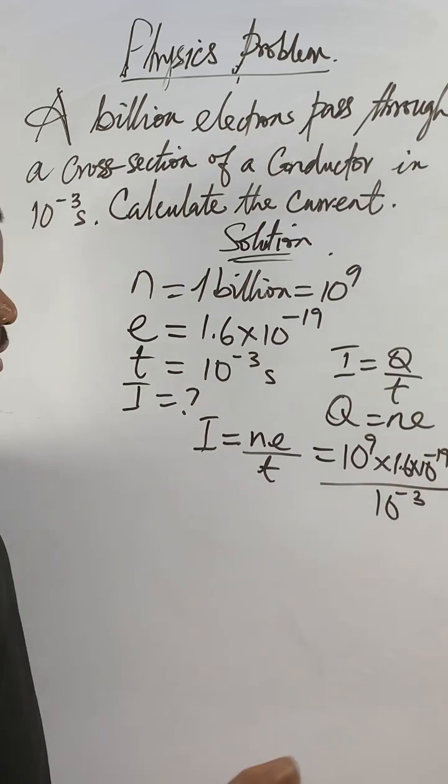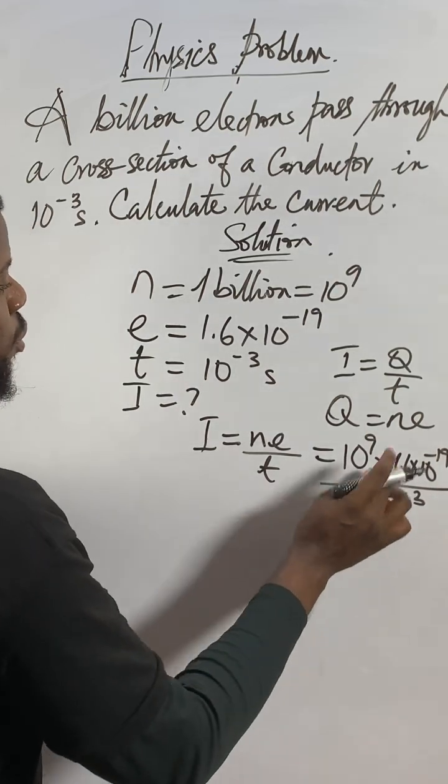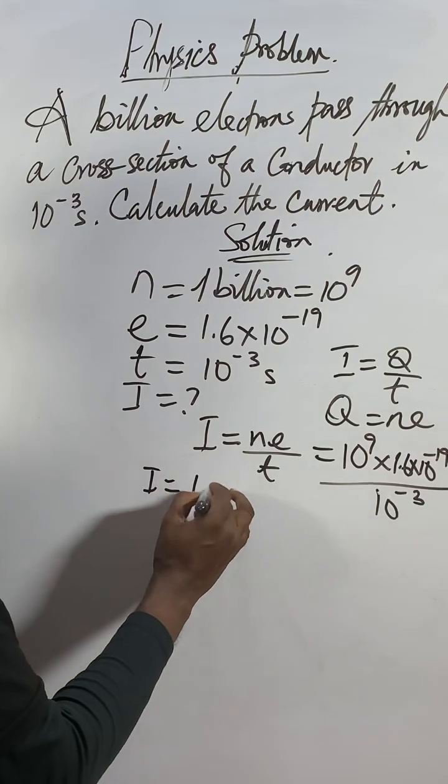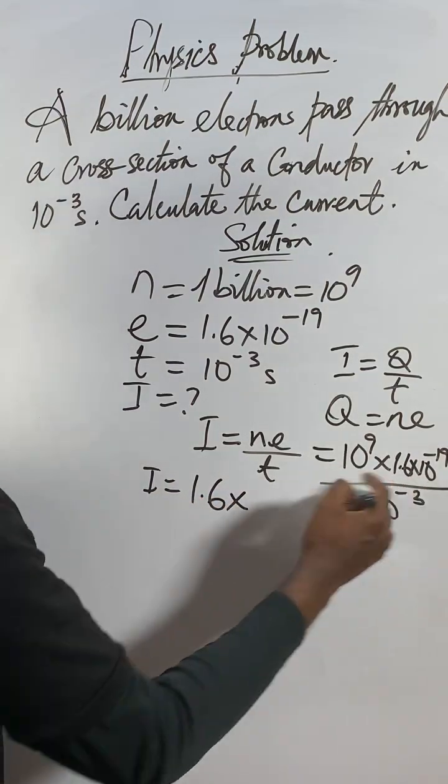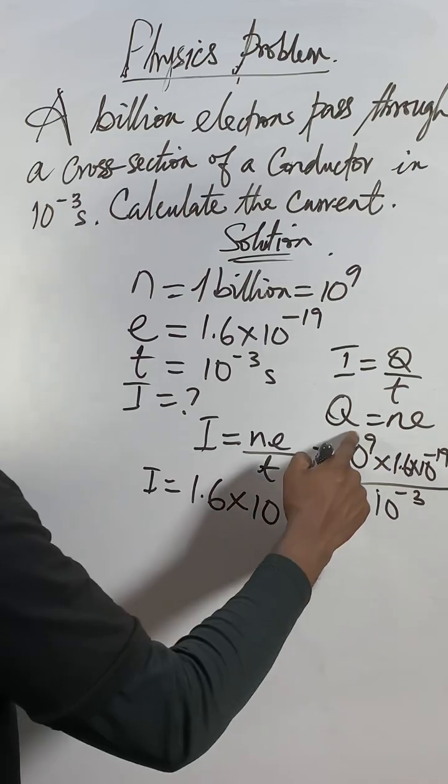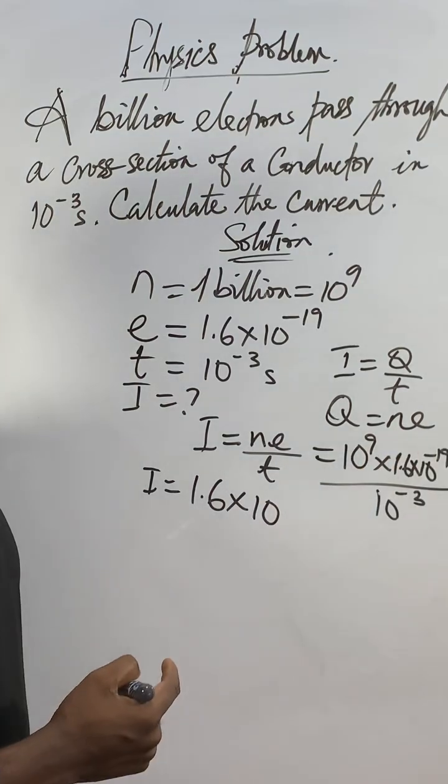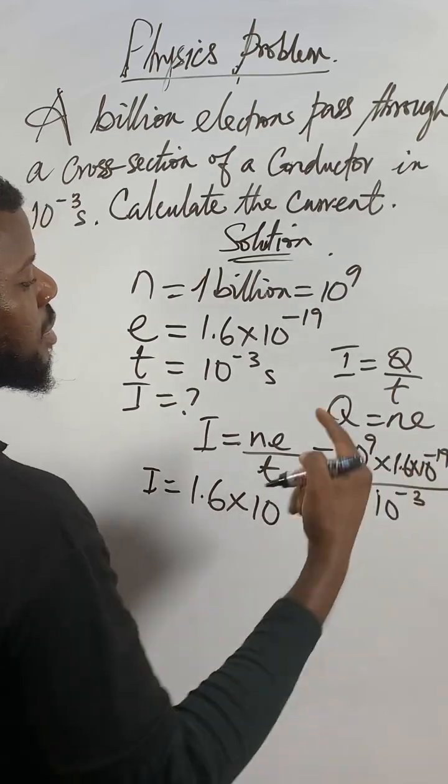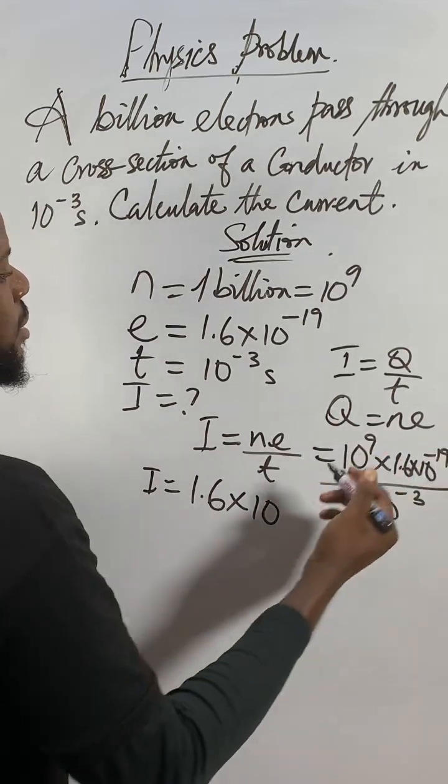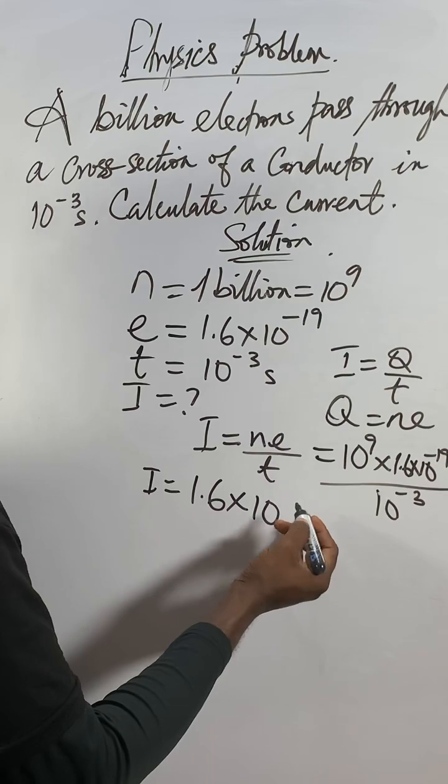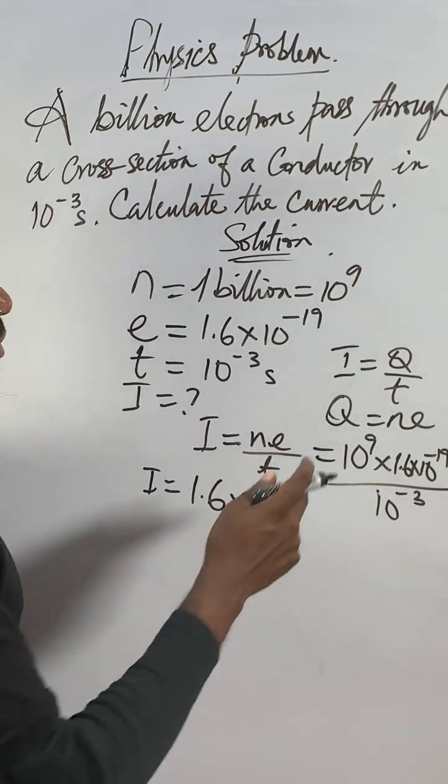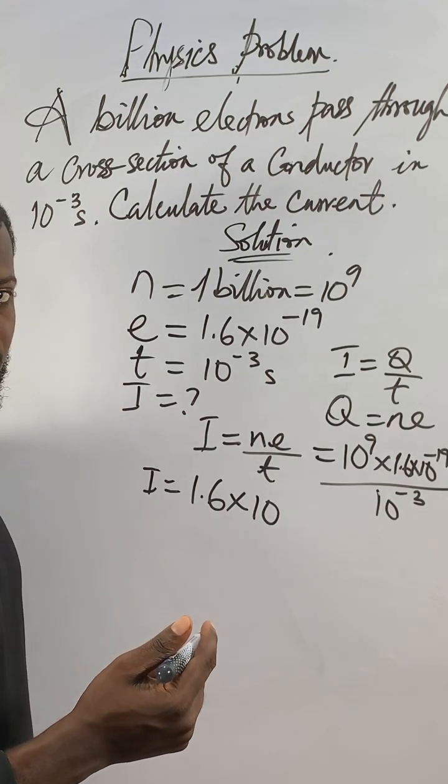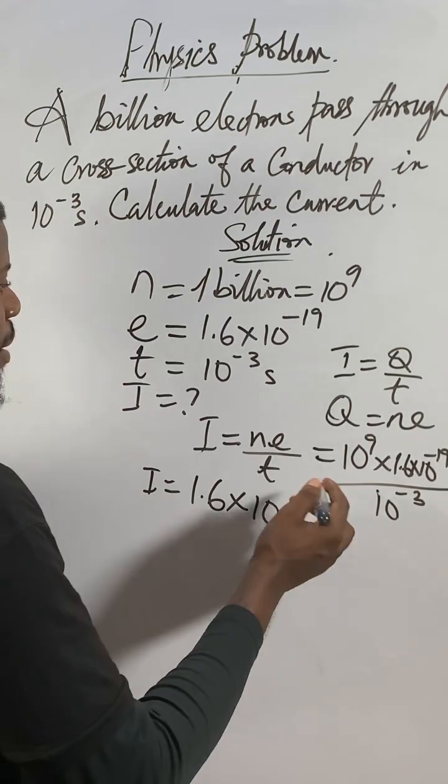Using product law for the numerator, I'll get I to be equal to 1.6 times the base. Take one common base, then 9 minus 19, because it's 9 plus minus 19, so plus minus is minus. 9 minus 19 will give us minus 10.